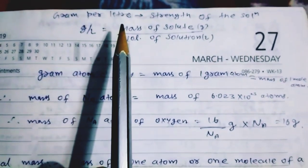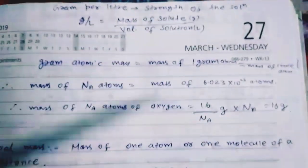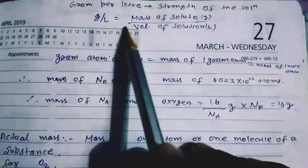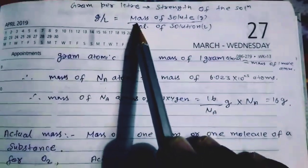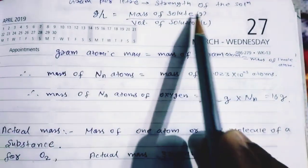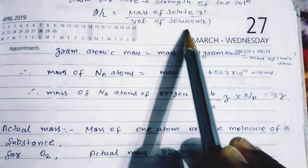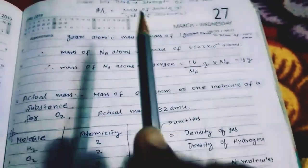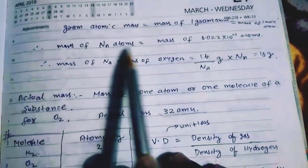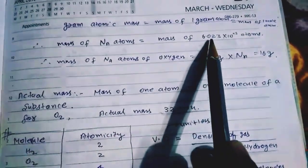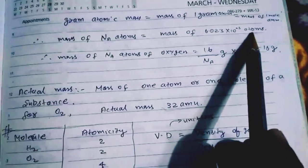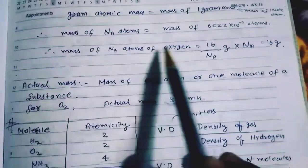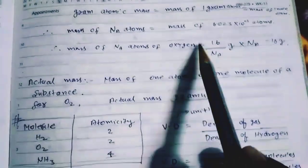ग्राम पर लीटर क्या होता है — ग्राम पर लीटर का मतलब है strength of the solution. ग्राम पर लीटर निकालने के लिए: mass of the solid in gram divided by volume of solution in liter. Mass of Avogadro's atoms निकालना हो तो — mass of 6.023 into 10 to the power 23 atoms के equal होता है।